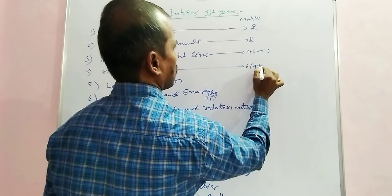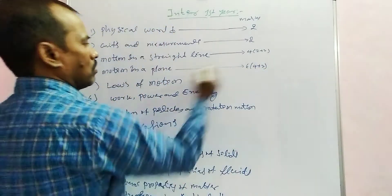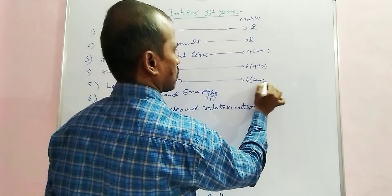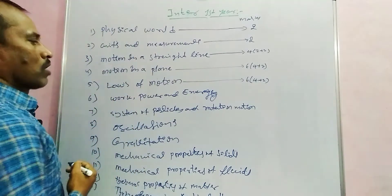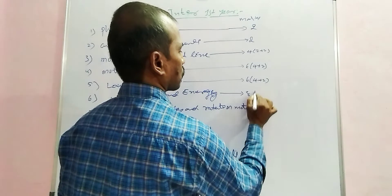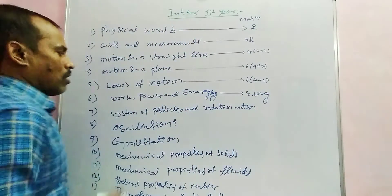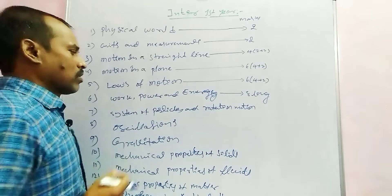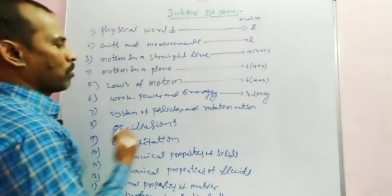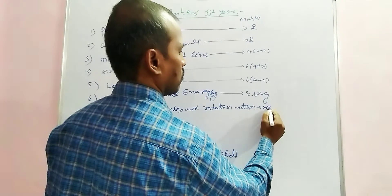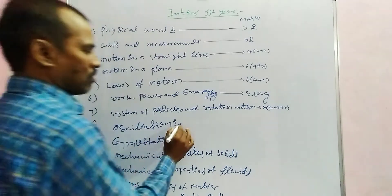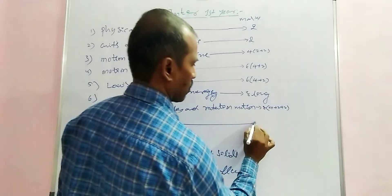Motion in a Plane carries 6 marks — that is 4 plus 4 plus 2. Laws of Motion also carries 6 marks — 4 plus 2. Work, Power and Energy carries 8 marks as a long answer. System of Particles and Rotational Motion carries 8 marks. Oscillations also carries 8 marks as a long answer.